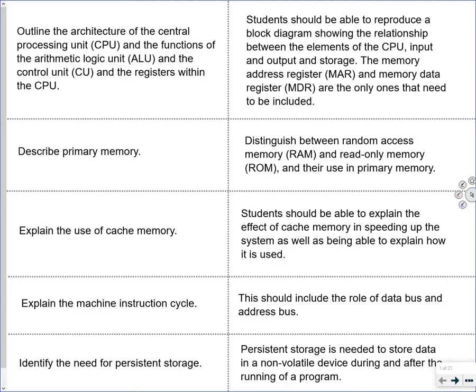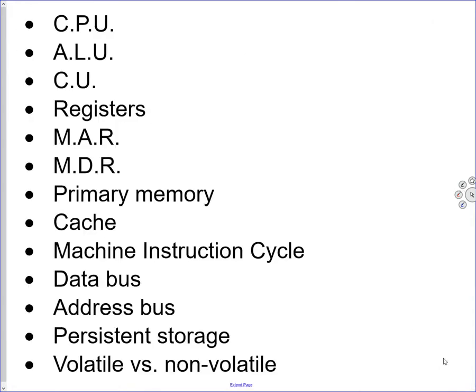Here is a list of the key terms to know: CPU, ALU, CU, registers, MAR, MDR, primary memory, cache, machine instruction cycle, data bus, address bus, persistent storage, and volatile versus non-volatile.